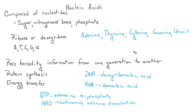The last class of organic compounds are nucleic acids. These are composed of nucleotides, which consist of a sugar, a nitrogenous base, and a phosphate. The sugar is going to be either ribose or deoxyribose, which are five-carbon sugars. The five bases are adenine,